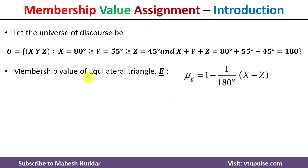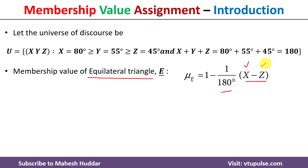Next is the equilateral triangle. The membership value of the equilateral triangle is always equivalent to 1 minus (1 divided by 180 degrees) multiplied by (x minus z), where x is the maximum angle and z is the minimum angle.